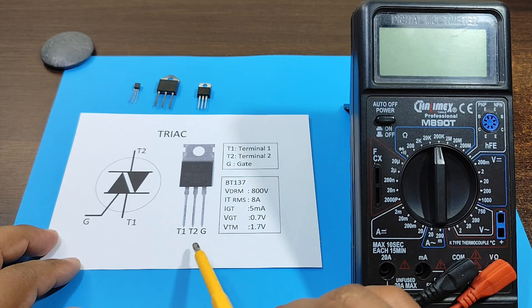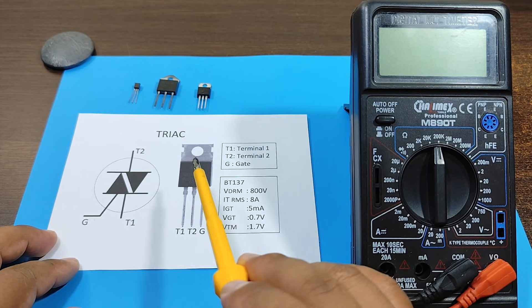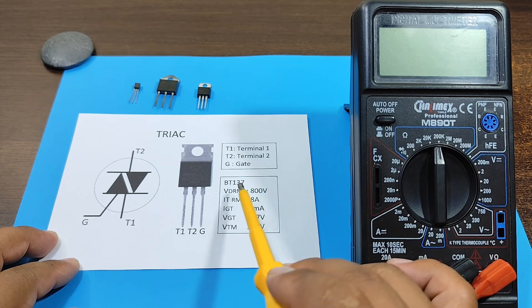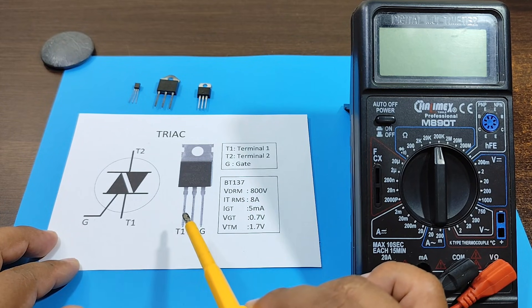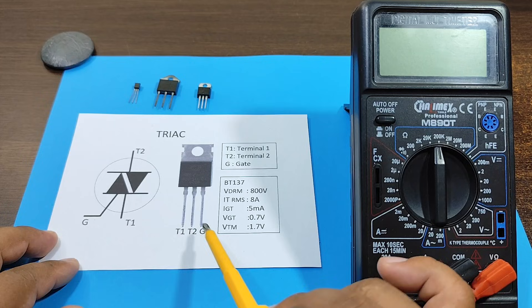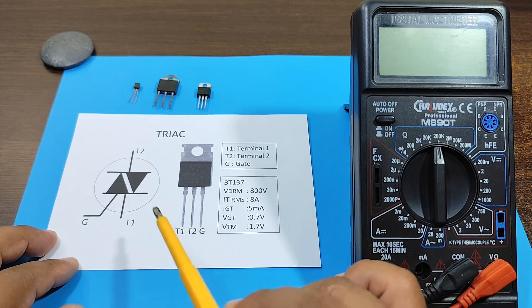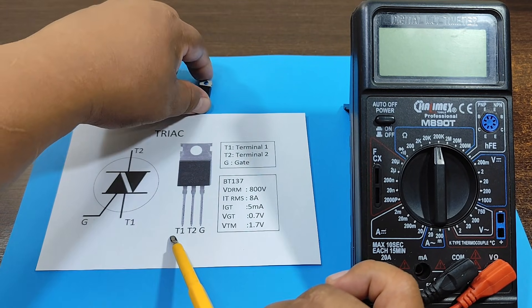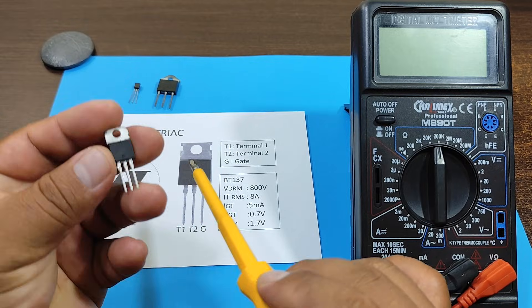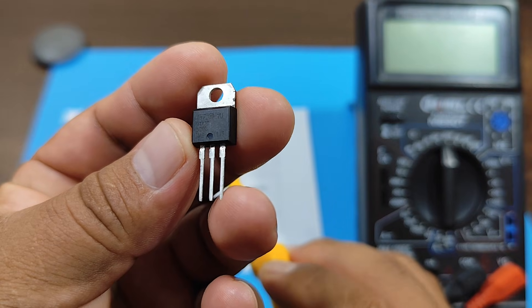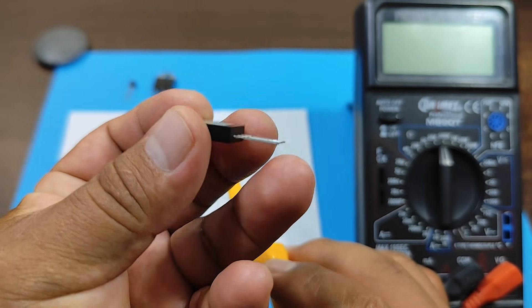And regarding the pin distribution on your triac, that will depend a lot on the model you are using. However, in most cases this is the distribution. Now, regarding the appearance of your triac, that is, the package, it usually has this type of package in most cases.